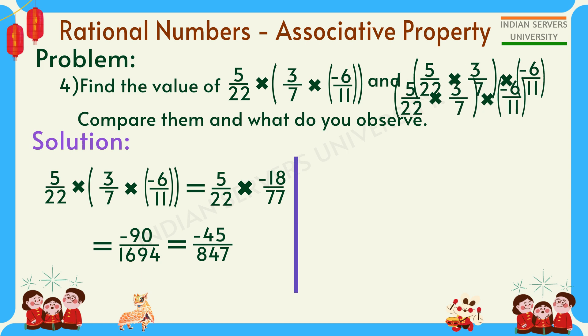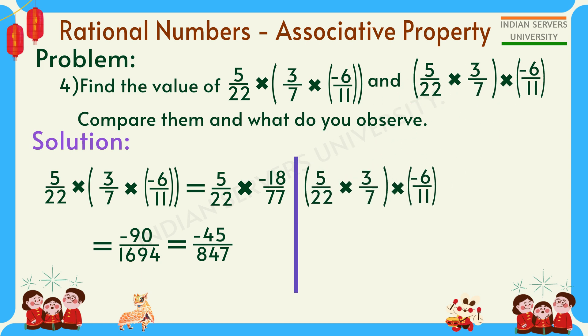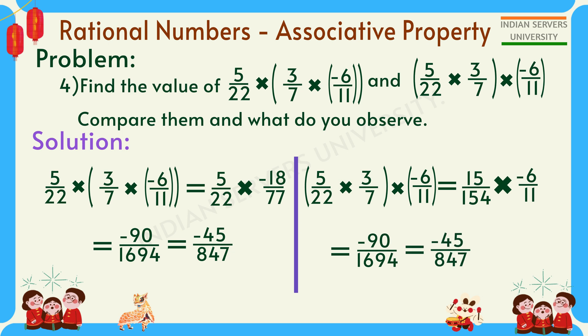For the second grouping, solve 5/22 × 3/7 first: 5 × 3 = 15, 22 × 7 = 154. So 15/154 × (-6/11). Multiplying: 15 × (-6) = -90, 154 × 11 = 1694. This gives -90/1694, which equals -45/847. Both expressions are equal, confirming multiplication is associative.